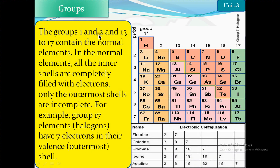Groups one and two, and groups 13 to 17, are normal elements. In these normal elements, all inner shells are completely filled with electrons — meaning the s and p inner shells are filled — and only the outermost shell is incomplete. For example, group 17 elements (halogens) have 7 electrons in their valence shell, meaning the outermost shell is incomplete.